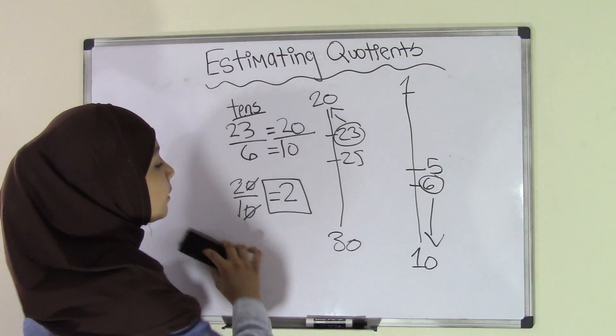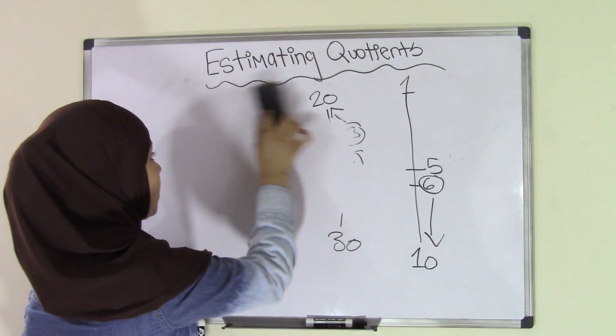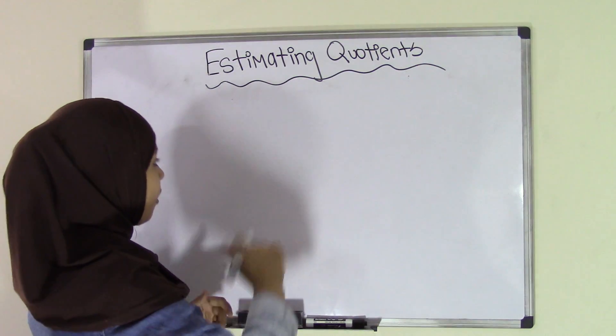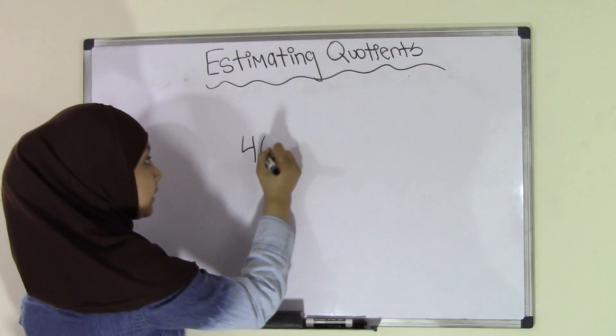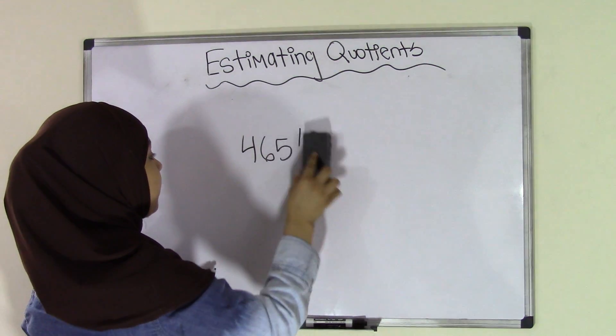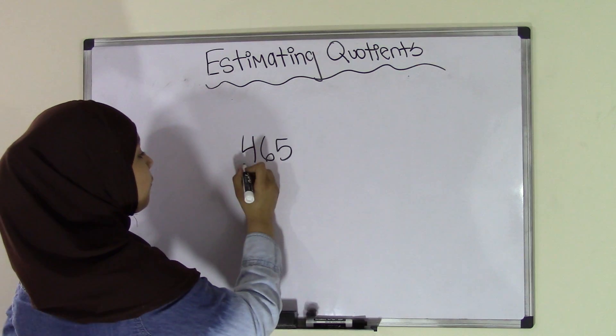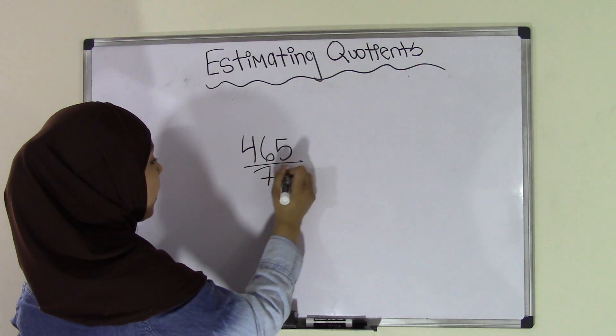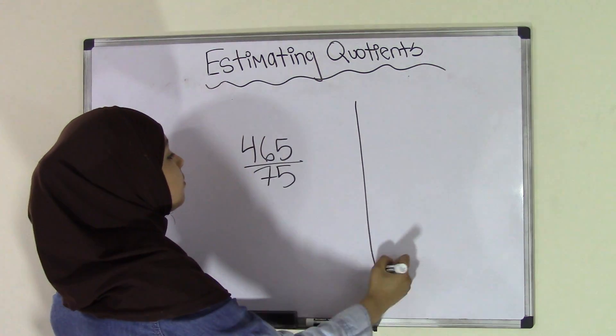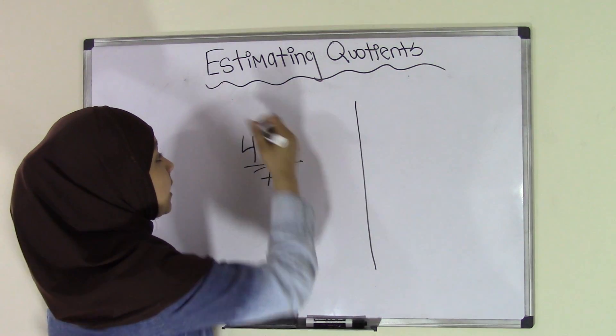Now let's take a look at an example that involves hundreds. So let's say we have a big number such as 465 divided by, or we could write this here in fraction form, 465 divided by 75. And now we're going to do the same thing. We're going to create two sets of data. In this case, we're rounding to hundreds.